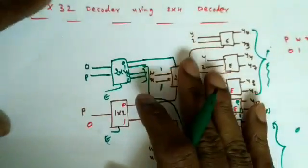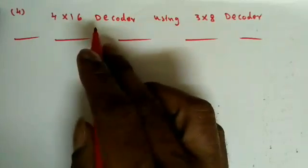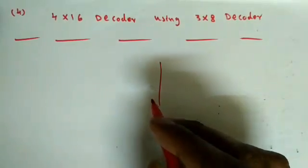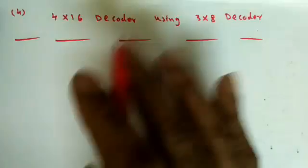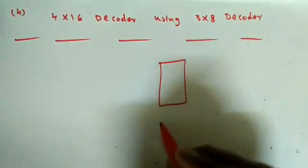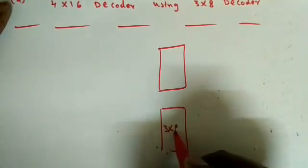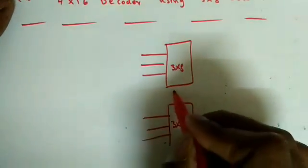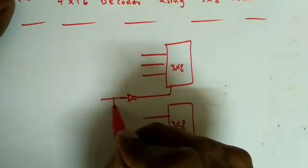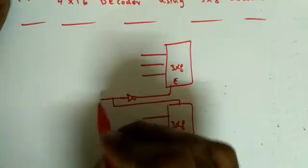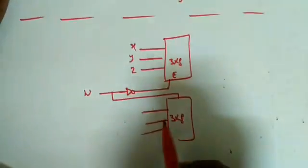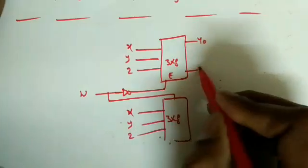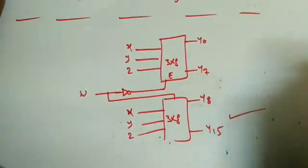Now we'll see how to construct a 4x16 decoder using 3x8 decoders. Since each 3x8 gives 8 outputs, we only need two 3x8 decoders for 16 outputs. Both take x, y, z as the three data inputs. The fourth input w becomes the enable input: w=0 enables the upper decoder (y0–y7) and w=1 enables the lower decoder (y8–y15).